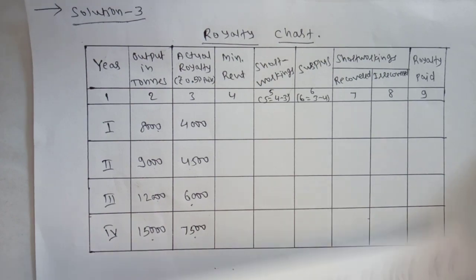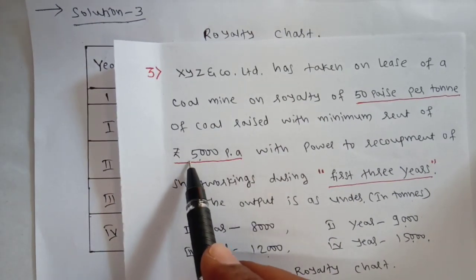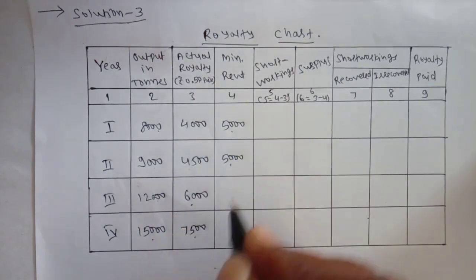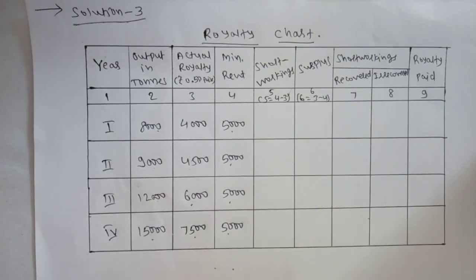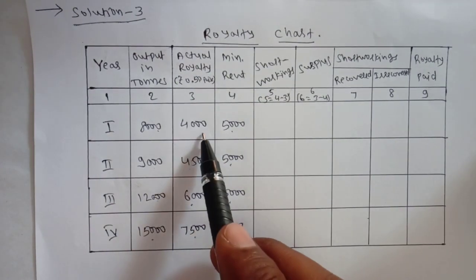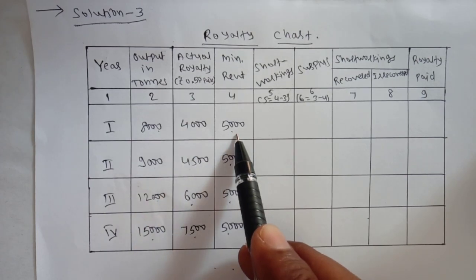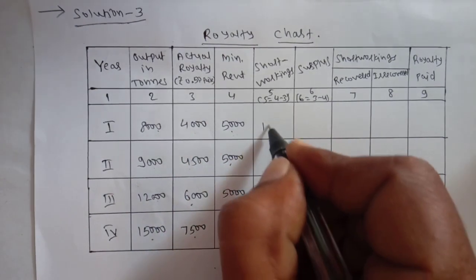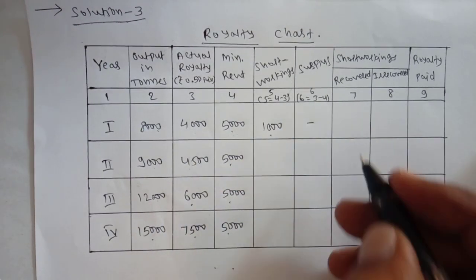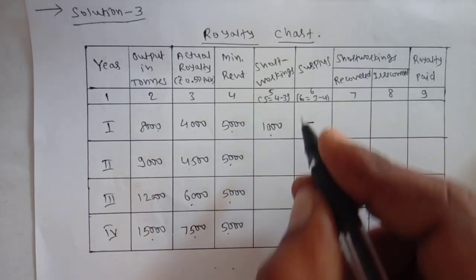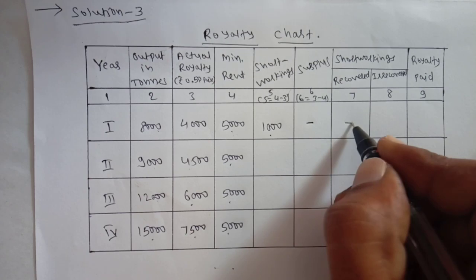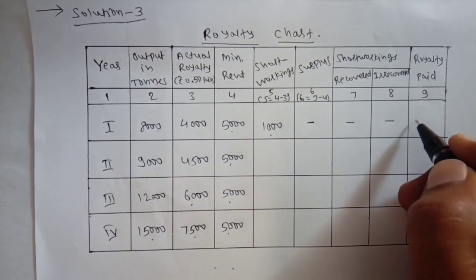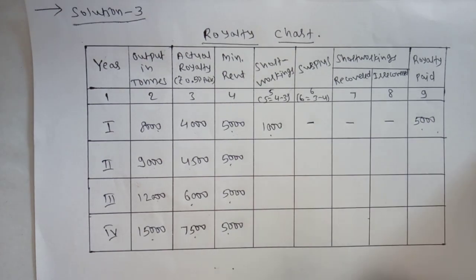Next is minimum rent. As already told, minimum rent is fixed at Rs 5,000 per annum as given in the problem, so it is the same for all years: 5,000, 5,000, 5,000, 5,000. Now, short workings: when actual royalty is less than minimum rent, it is short workings. In the first year, actual royalty is 4,000 and minimum rent is 5,000, so there is a short working of 1,000. There is no surplus, no recovered amount, and no irrecovered amount. Actual royalty paid is whichever is higher — 5,000 minimum rent is higher, so 5,000 is paid as royalty.